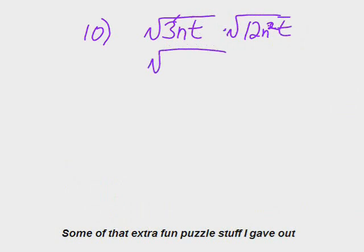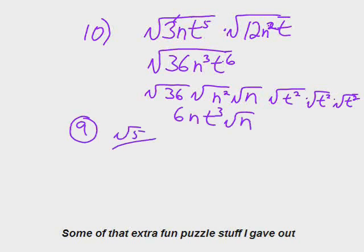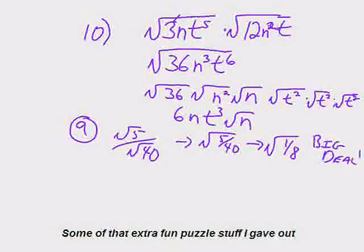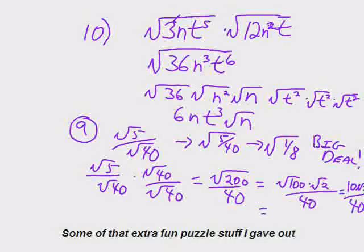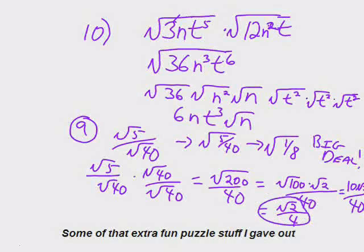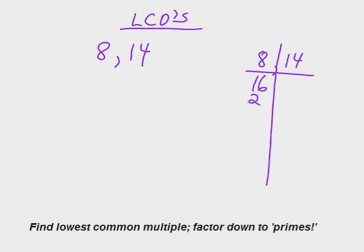Here's more of that extra fun puzzle with radicals. If you have the square root of 3nt^5 times the square root of 12n²t, smash them together. And look, you've got some things you can factor out. You've got some perfect squares like 36, and t^6 is really just t² cubed.